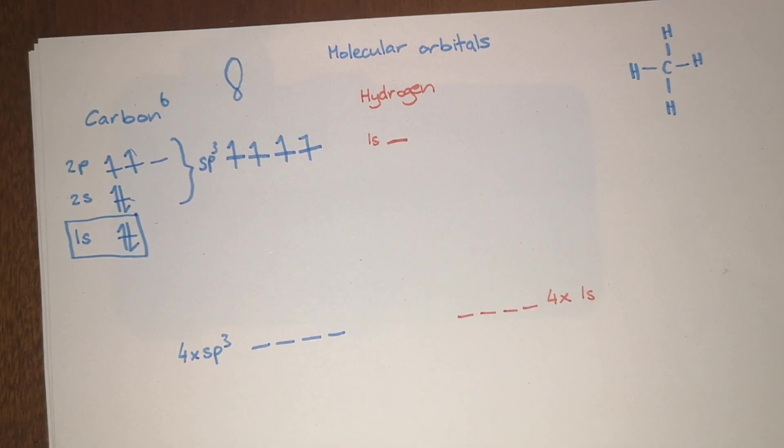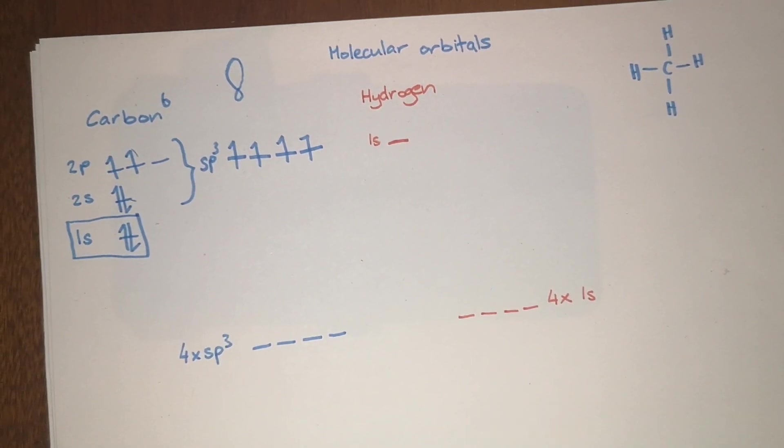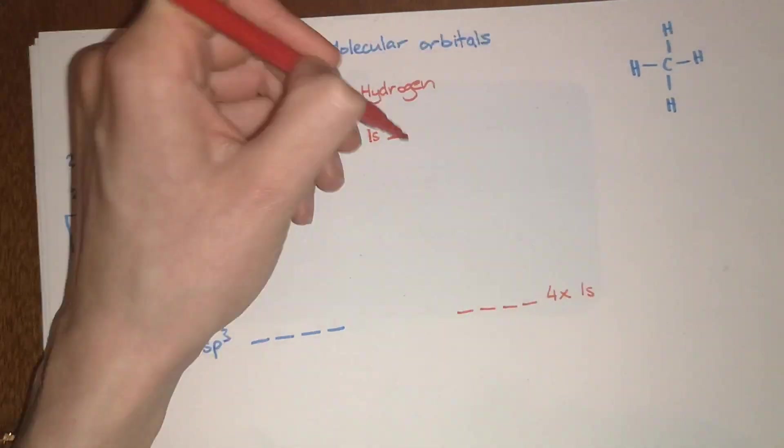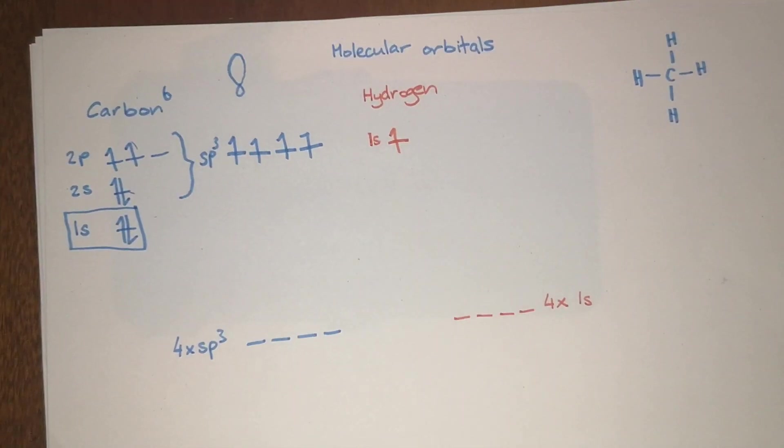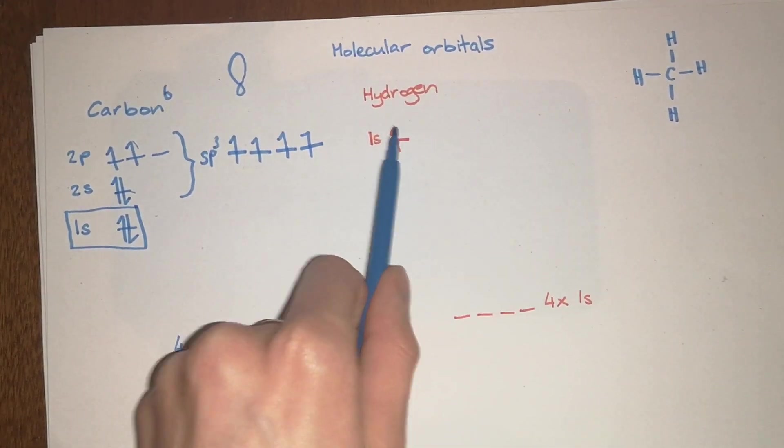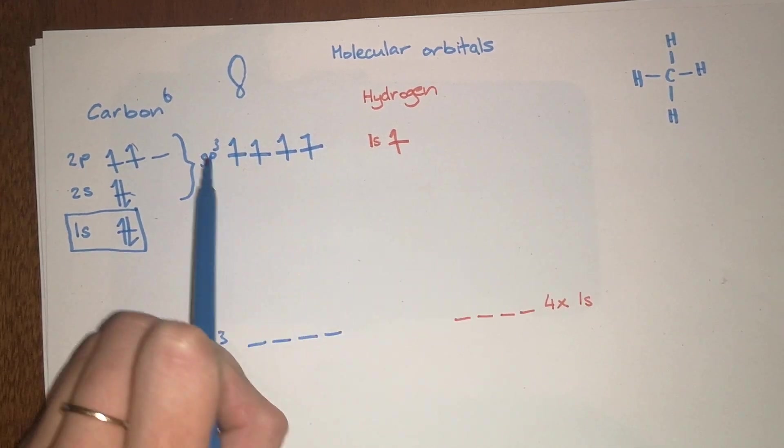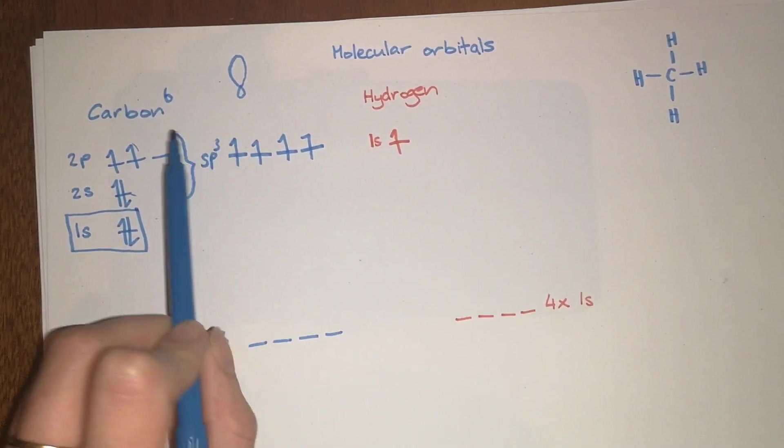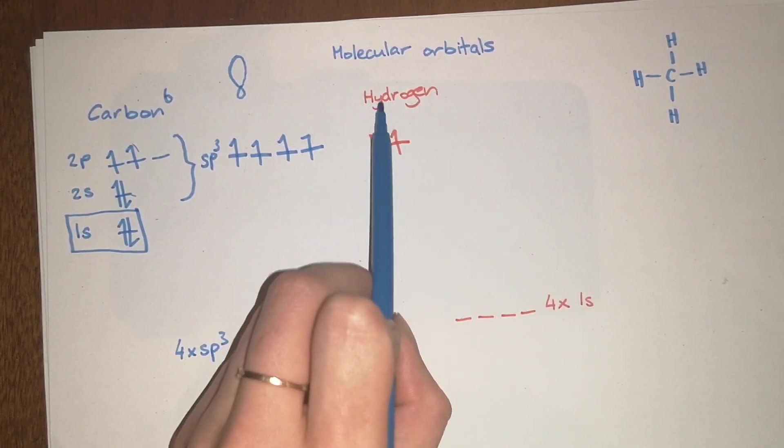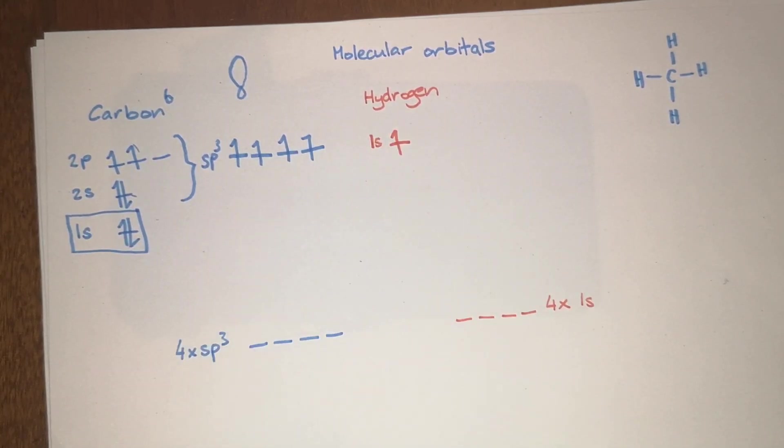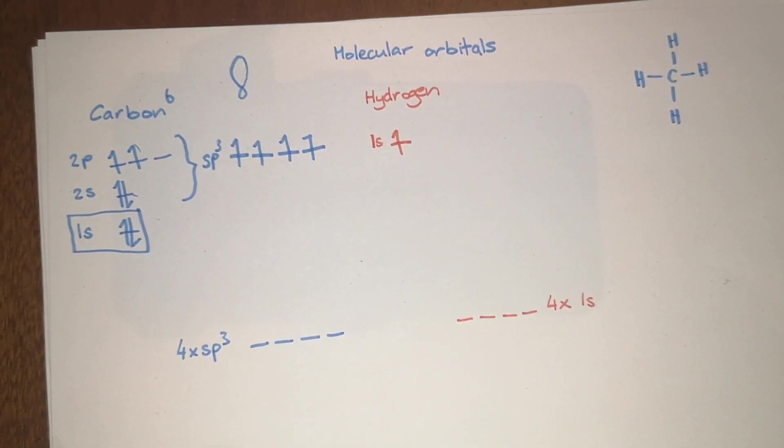Now the hydrogen atom, much more simple. It has a 1s orbital and only has one electron. So when your four hydrogen atoms come together to combine with your carbon, the carbon will have to have sp3 hybridized orbitals so that each hydrogen can form a bond with one of these orbitals.